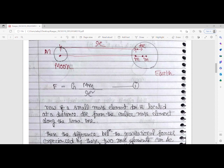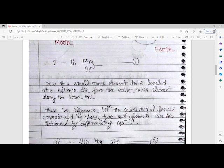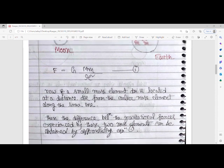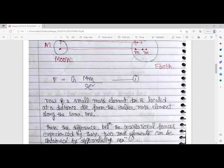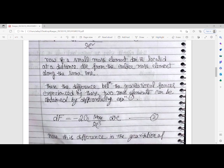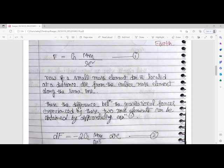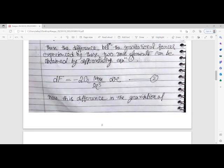Then the difference between the gravitational forces experienced by these two mass elements can be obtained by differentiating equation one. The difference in gravitational force experienced by the two mass elements is given by dF.